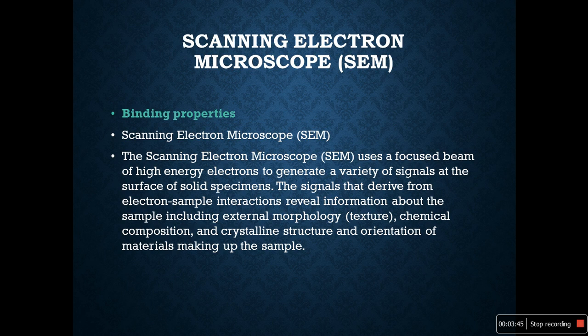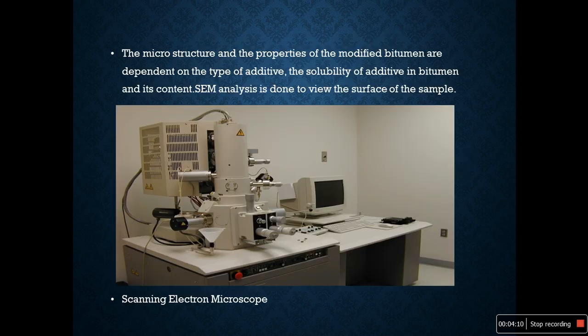The scanning electron microscope test is used to find the binding properties. It uses a focused beam of high energy electrons to generate a variety of signals at the surface of solid specimens. The signals derived from electron-sample interactions reveal information about the sample including external morphology, chemical composition, and crystalline structure and orientation of materials making up the sample.